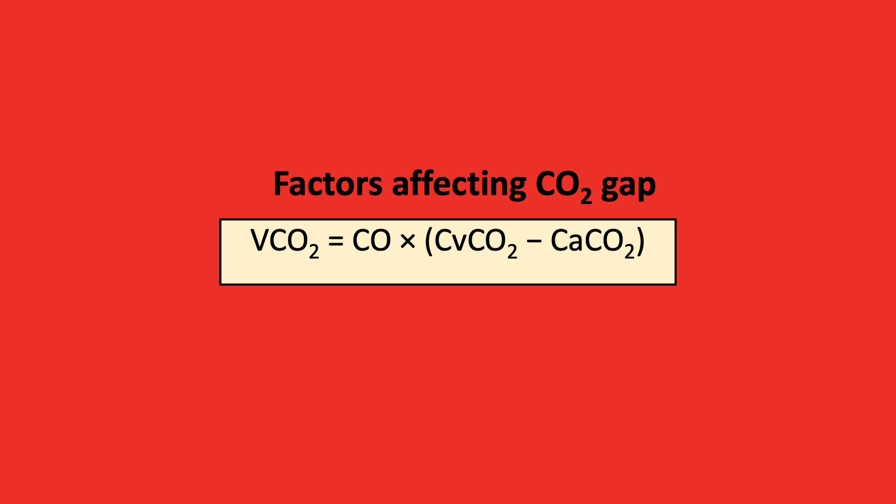Now let's discuss the factors affecting the CO2 gap. If we apply the Fick equation, CO2 excretion is equal to the product of cardiac output by the difference between the content of venous CO2 minus the arterial content of CO2. For a given VCO2, a decrease in cardiac output results in an increase in the PCO2 gap.